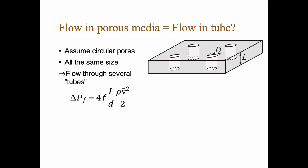Then you can use this equation here, ΔP = 4fL/d and so on, to describe this flow. Often you can assume laminar flow in porous media, and then you get that 4 times the Fanning friction is 64 divided by Reynolds number.